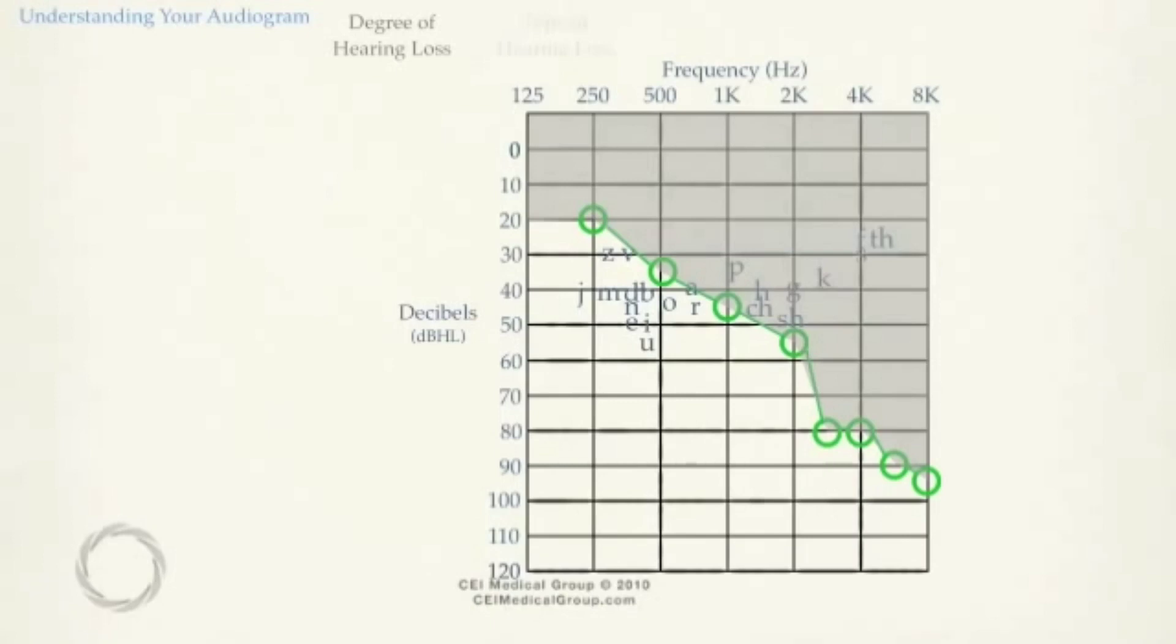However, even a mild hearing loss can cause a person to miss 25 to 40% of speech as background noise and the speaker's distance from the listener can affect ability to understand. In general, normal conversational speech occurs around 50 dB, where a shout is recorded at 70 dB.